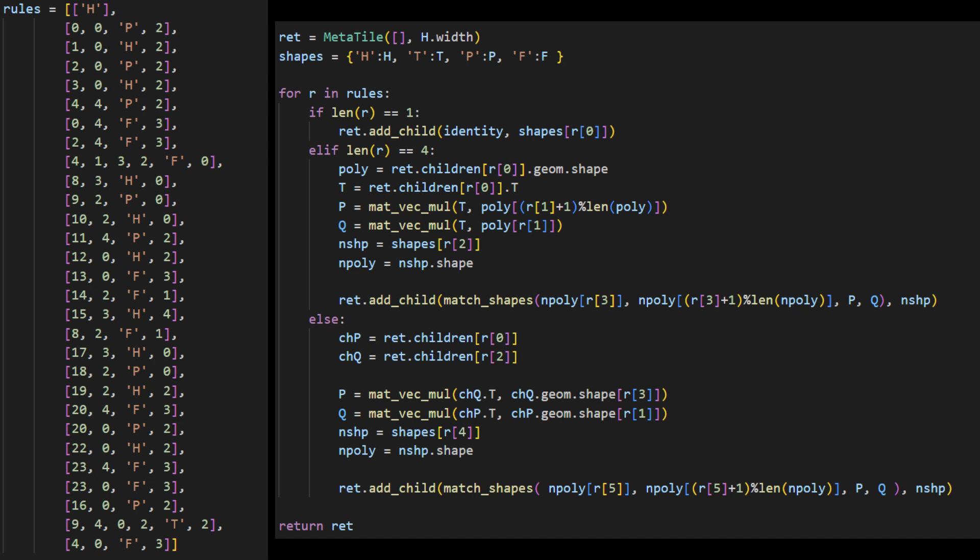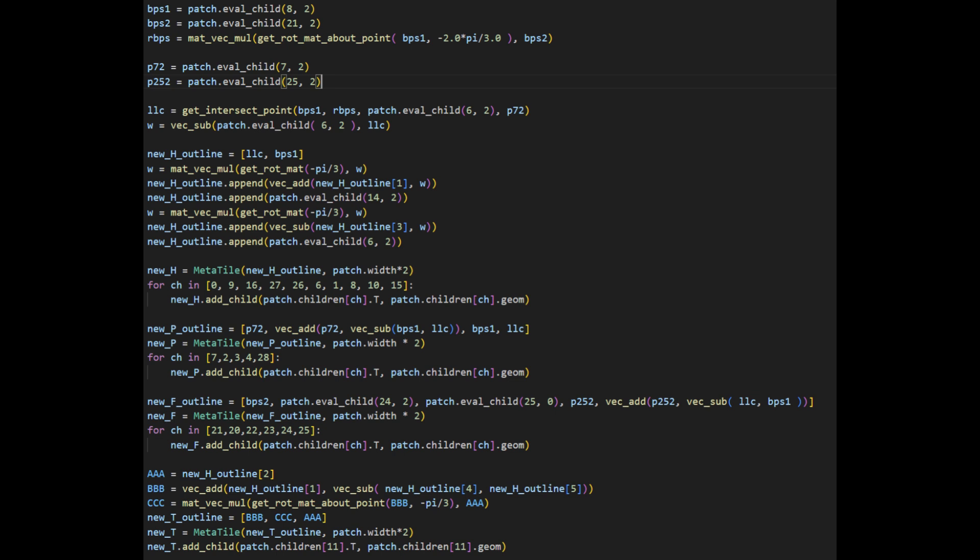As you can see on the left are the rules, and then the right is how it creates the meta tiles using the rules. And then it creates the entire shape using this code on the screen, which just connects all of these larger meta tiles together.